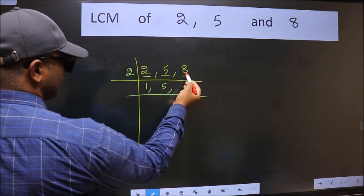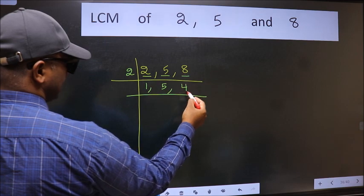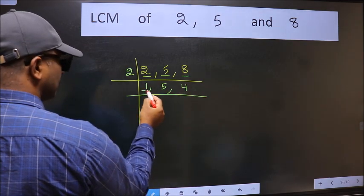The other number 8. When do we get 8 in 2 table? 2 fours 8. Now we got 1 here.